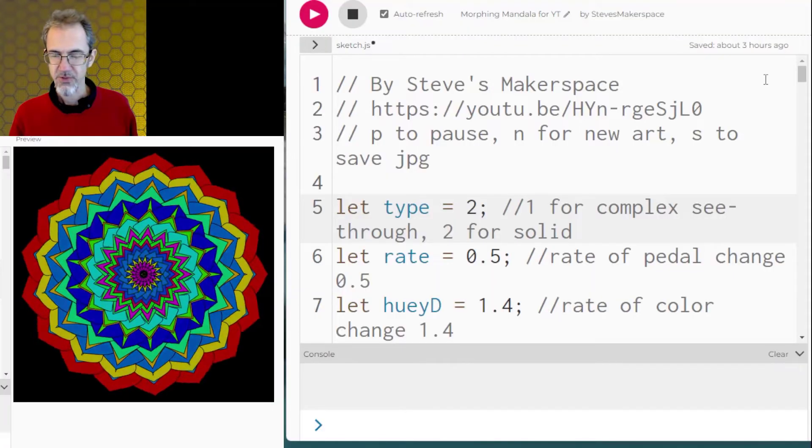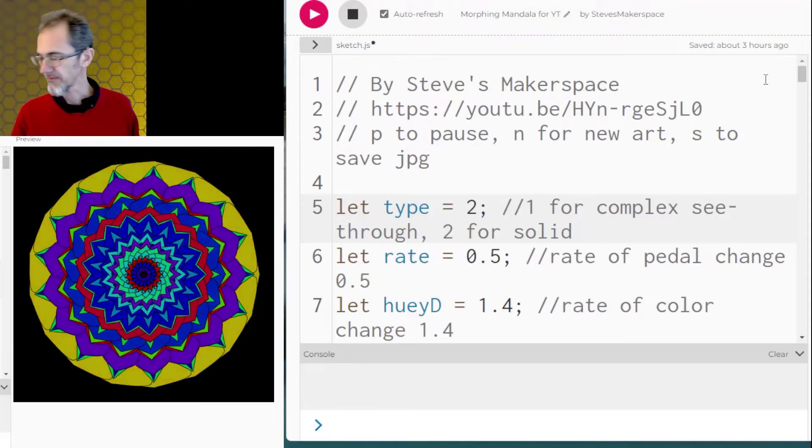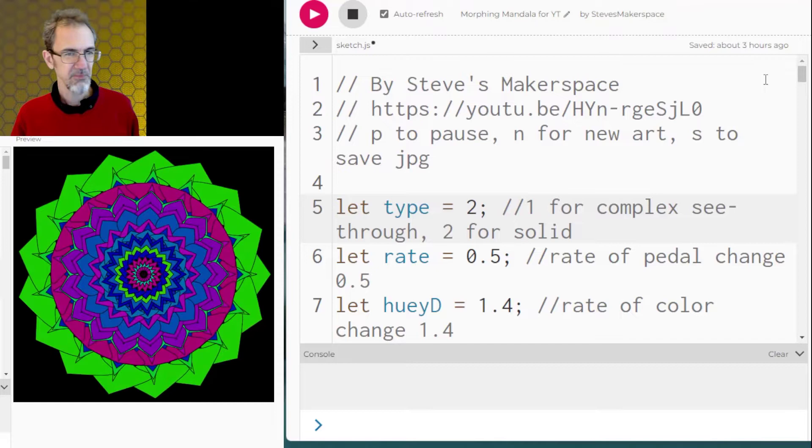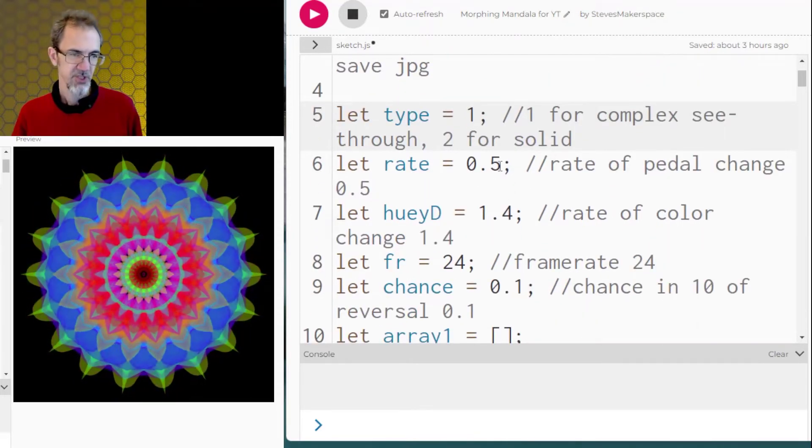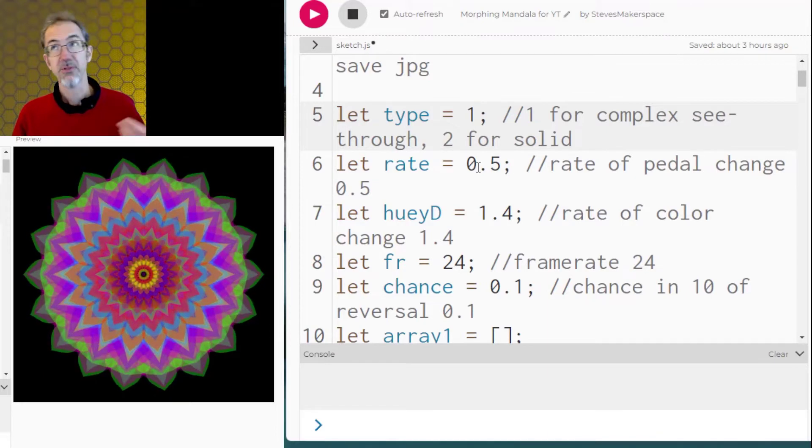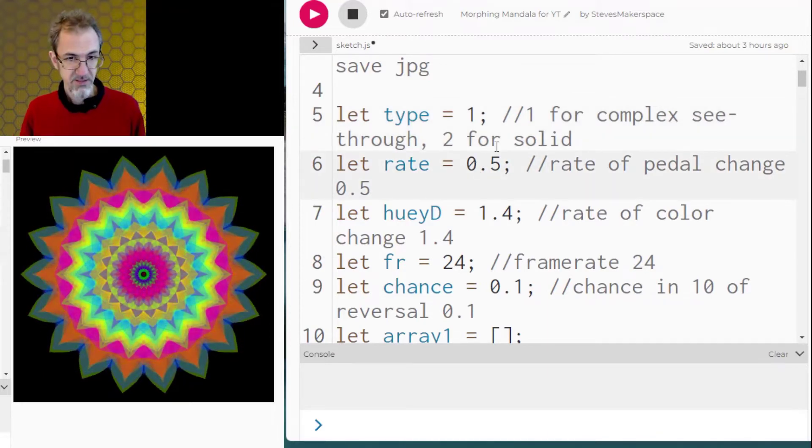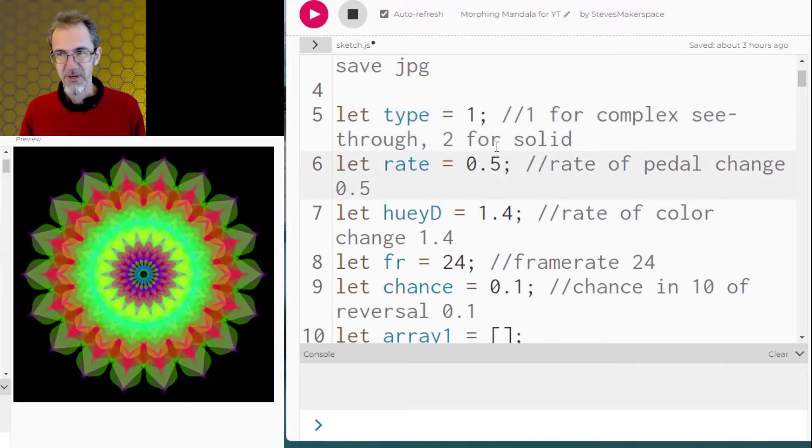It does use your computer resources a bit. I've got my fan starting to whir on me. We can also change the rate of petal change. So if I were to make this times 5 this might be a little crazy. There we go and that's a little too much I think.